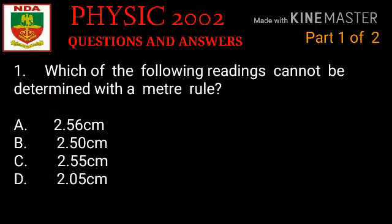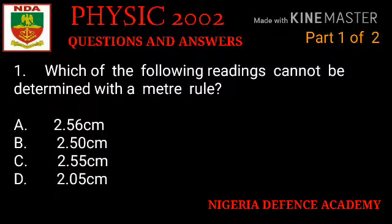Question number one: which of the following readings cannot be determined with a meter rule? Option A: 2.56 cm. Option B: 2.50 cm. Option C: 2.55 cm. Option D: 2.05 cm. Which of these options is the right answer?